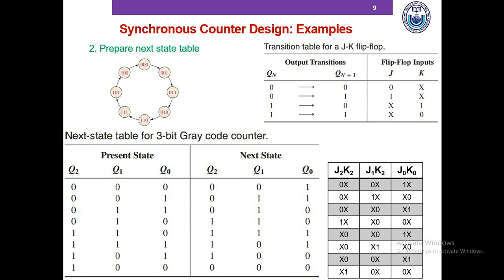The next step is to prepare the next state table using the transition table we have just made. The present state and next state columns can easily be written using the state diagram. The counter goes from 0 to 1, so if the present state is 0, the next state is 1. Since it goes from 1 to 3 and then to 2, if the present state is 1 the next state is 3, and if the present state is 3 the next state is 2 and so on. We continue filling in the next state table going around the full circle and returning back to 0, 0, 0.